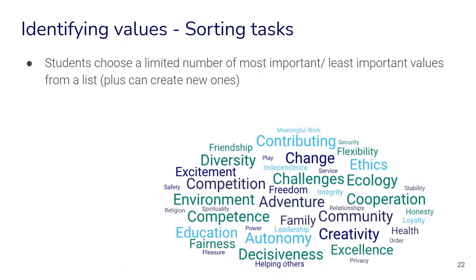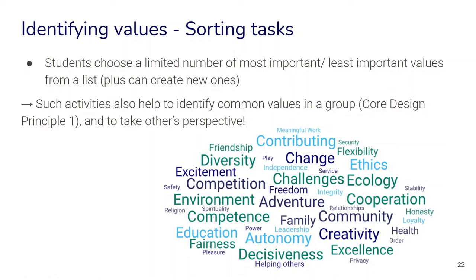Sorting tasks simply involve students choosing a limited number of most important or least important values from a list — or creating their own — typically a list of 30 to 40 different values, with most important values usually no more than three to five, to really make them think and prioritize. Such activities can also help identify common values in a group, which relates to core design principles for cooperation. It also helps students take other people's perspectives and consider what is important to them.